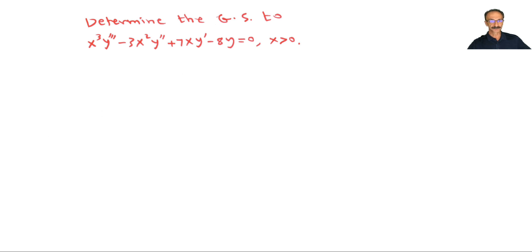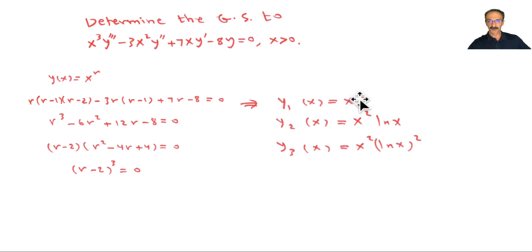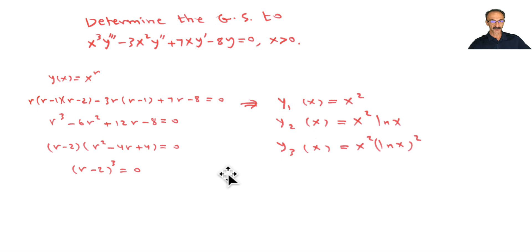Example 5: determine the general solution for the following equation. After substituting y = x^r and doing the algebra, we get (r - 2)³ = 0 — a triple repeated root r = 2. So y₁ = x², y₂ = x²·ln(x), and y₃ = x²·(ln x)². That pattern of multiplying by an additional ln x each time is what you use for higher-order repeated roots.